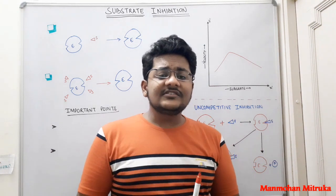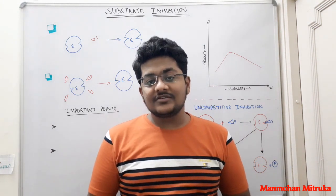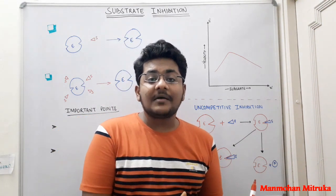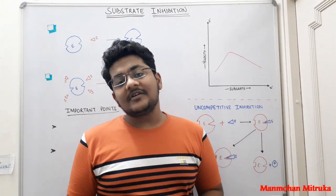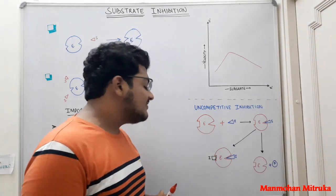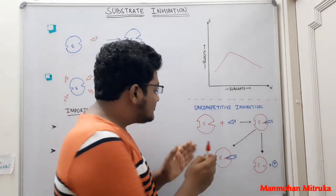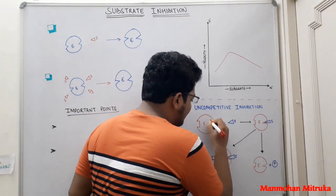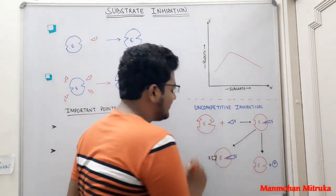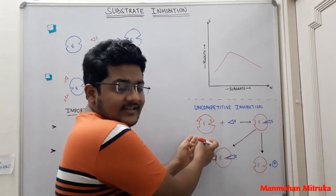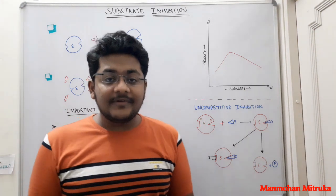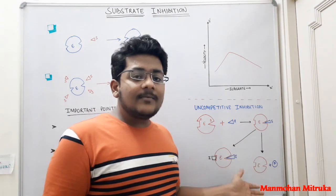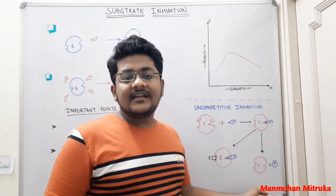For that we first need to understand what is uncompetitive inhibition. Uncompetitive inhibition is an inhibition where there is no competition between the substrate and the inhibitor to bind to the enzyme. So for example, this is the enzyme and it has two sites: the first site is for the substrate and this site is for the inhibitor. The substrate binds to the enzyme and forms an enzyme-substrate complex. If there is no inhibitor present, this enzyme-substrate complex would end up forming a product and a vacant enzyme.